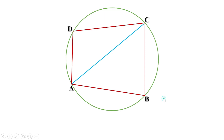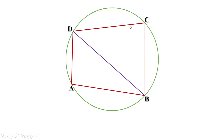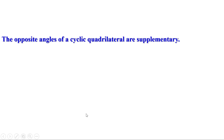So they are supplementary, or their sum is 180 degrees. In the same way, if we draw the second diagonal BD, these are alternate arcs and angle A and angle C are angles on the alternate arcs. So they are supplementary. That means the opposite angles of a cyclic quadrilateral are supplementary, or the sum of the opposite angles is always 180 degrees.